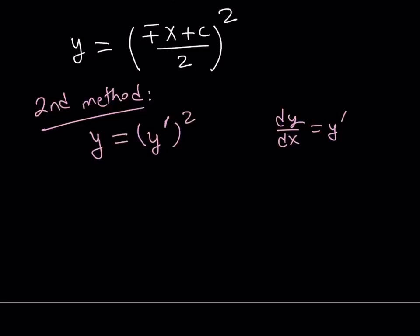Let's go ahead and differentiate both sides. Since y and y prime are both functions of x — y is differentiable, of course, since we're solving a differential equation defined over the real numbers — if you differentiate the left hand side you get y prime. The right hand side uses the chain rule: we have something squared, so we bring the two down, lower the power, and multiply by the derivative of the inside. The derivative of y prime is y double prime. So we multiply by the second derivative and we're done with differentiation.